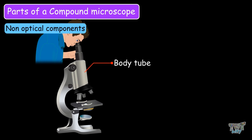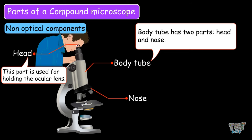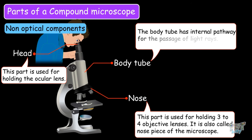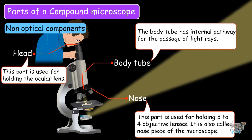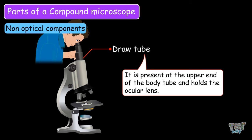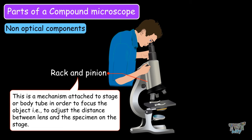The body tube has two parts: the head and the nose piece. The head holds the ocular lens, while the nose piece holds three to four objective lenses and is also called the nose piece of the microscope. The body tube has an internal pathway for the passage of light. The draw tube is present at the upper end of the body tube and holds the ocular lens. The rack and pinion is a mechanism attached to the stage or body tube to focus the object — that is, to adjust the distance between the lens and the specimen on the stage.